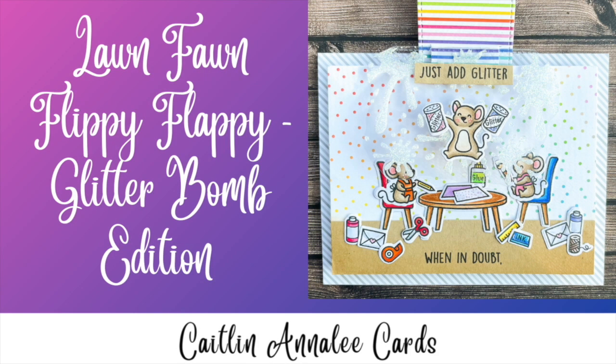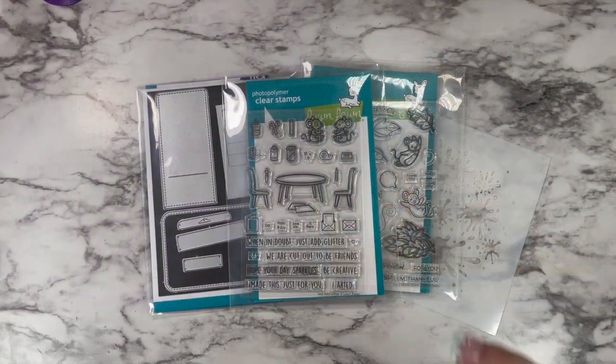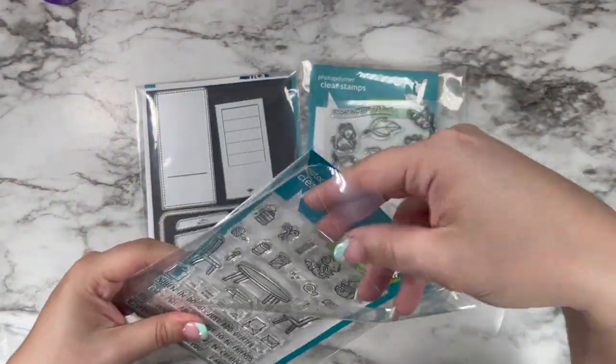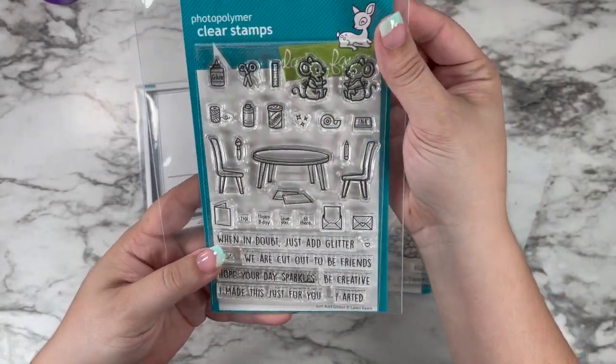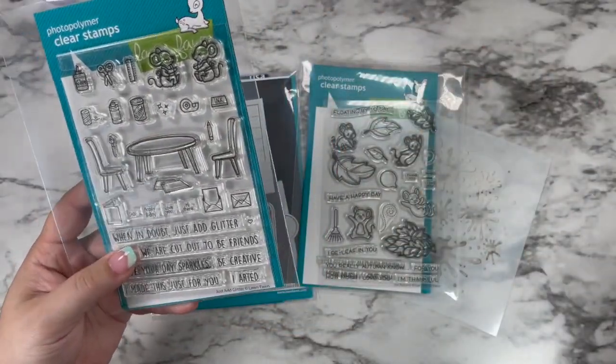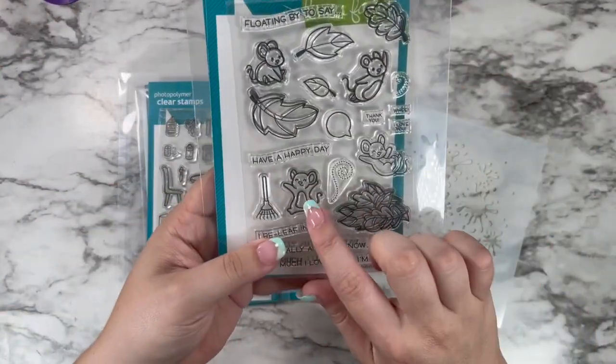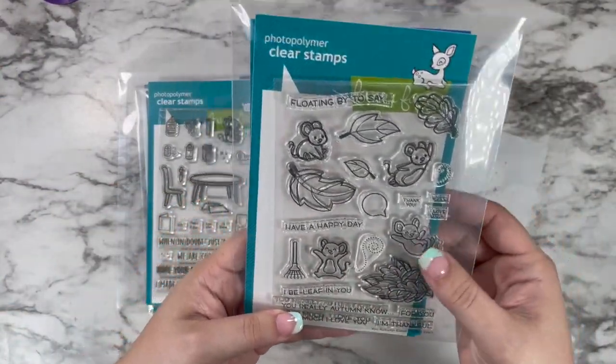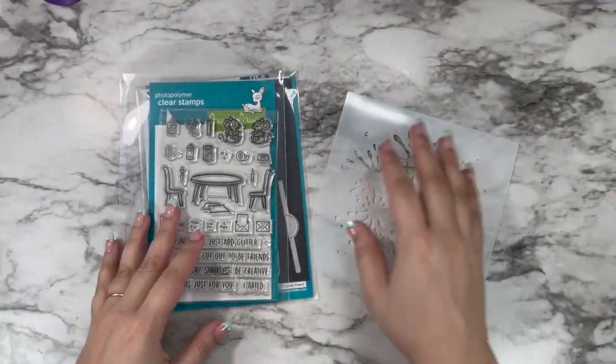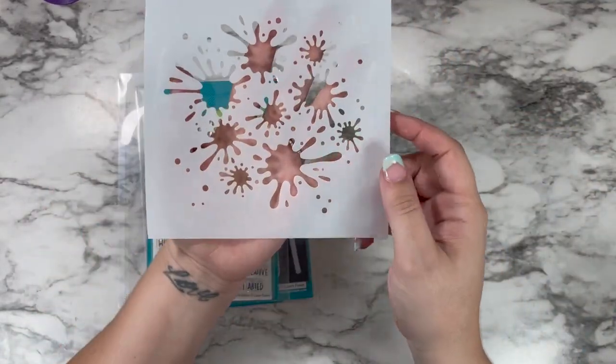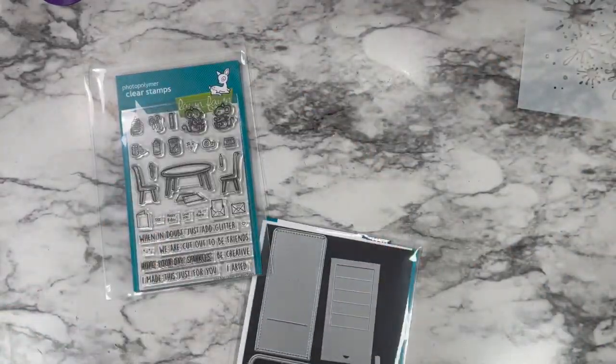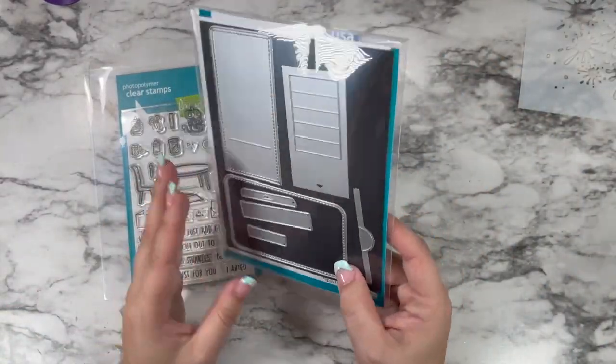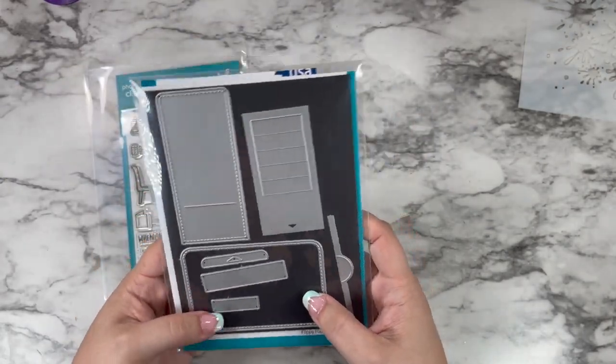Hi friends, this is Caitlin and there has been a new Lawn Fawn 2022 release, and so it's time to make another flippy flappy card. I grabbed my Just Add Glitter stamp set - this one is newly released and I absolutely love it. We're going to be borrowing this little jumping mouse from the You Autumn Know set, then we're also using the new Splatter Background stencil from Lawn Fawn as well as my well-loved Flippy Flappy dies.